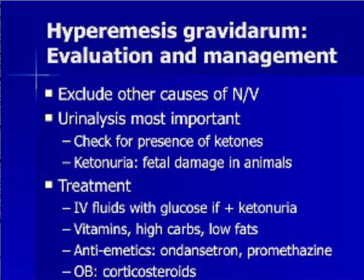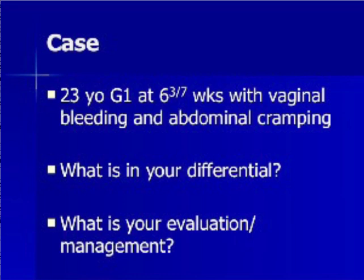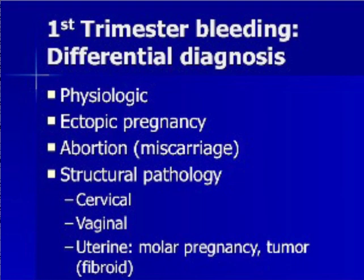Corticosteroids may help to reduce nausea in refractory cases, but should not be used without obstetric consultation. Let us move on to another case. A 23-year-old G1 at 6 and 3/7ths weeks complains of vaginal bleeding and abdominal cramping. What is the differential diagnosis and the proper evaluation and management of this patient with first trimester vaginal bleeding and cramping?